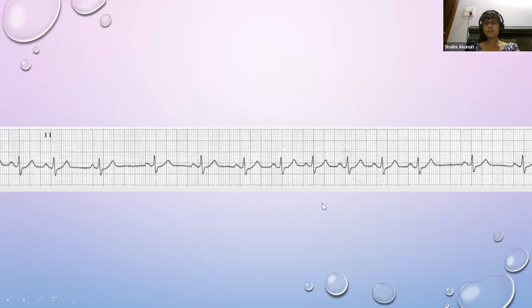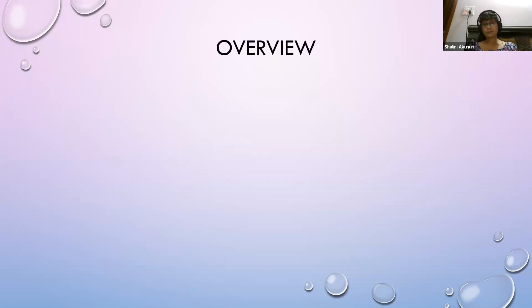This is an example of sinus arrhythmia. This is not a true arrhythmia - this variation is seen because of variation in respiration, inspiration and expiration. So sinus arrhythmia is quite normal.